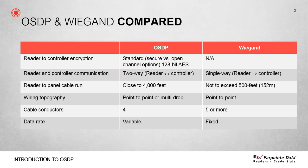OSDP provides for two-way communications. Wiegand is a one-way street for data. For example, this allows the reader to be queried as to its status — think about this as a health check, supervision, or sometimes referred to as a tamper. OSDP riding on RS-485 provides for longer cable runs, while Wiegand is shorter. Most Wiegand specifications only allow for 500 feet, whereas using OSDP with RS-485 you can go close to 4,000 feet. Wiring topography — OSDP offers optional configurations while Wiegand only offers one. This flexibility can be very beneficial in minimizing installation and retrofit operations.